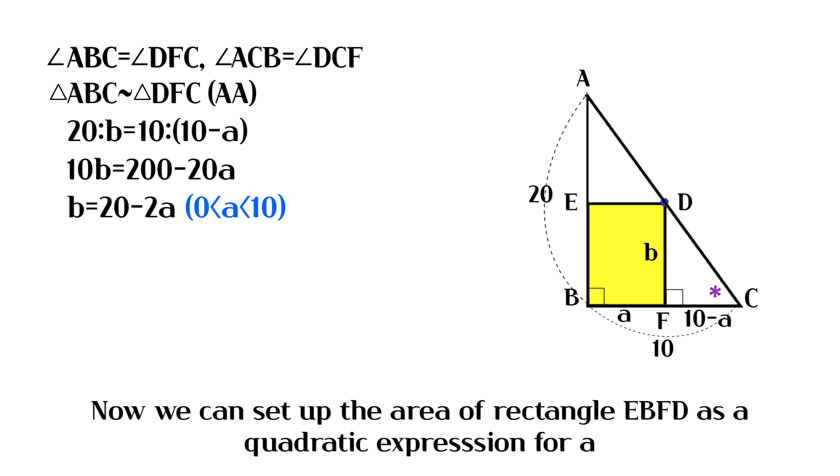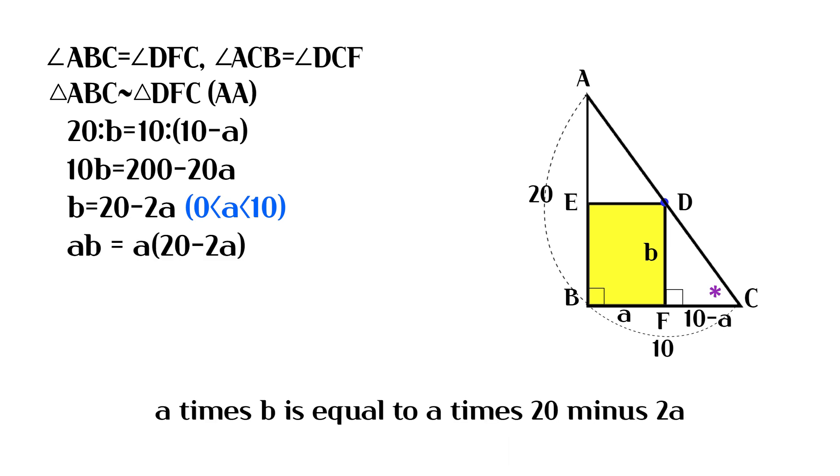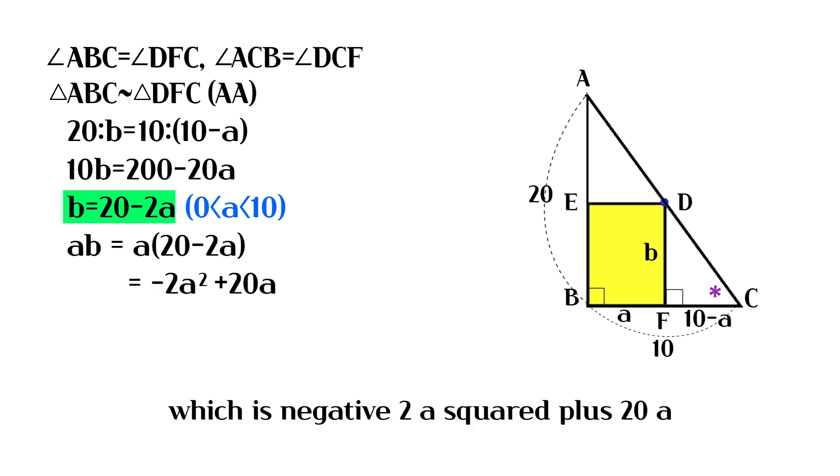Now we can set up the area of rectangle EBFD as a quadratic expression for a. A times b is equal to a times 20 minus 2a, which is negative 2a squared plus 20a.